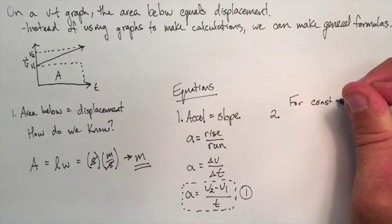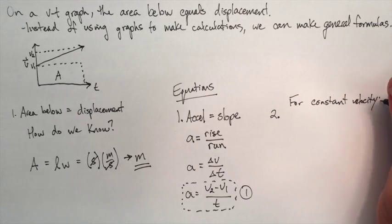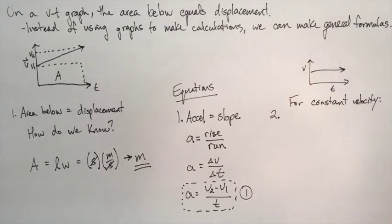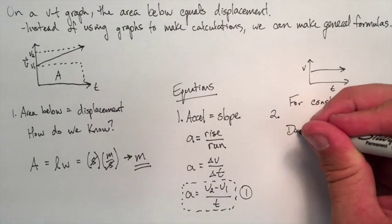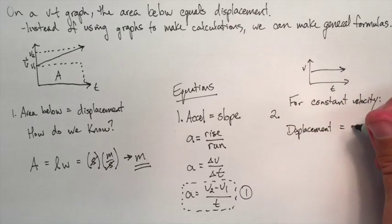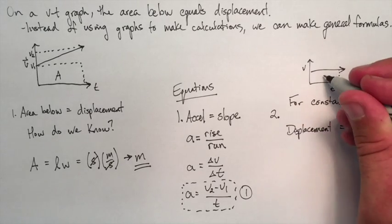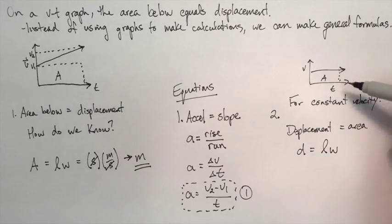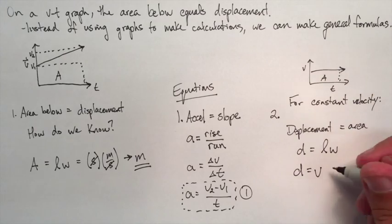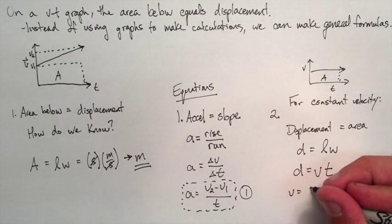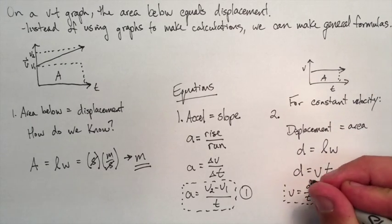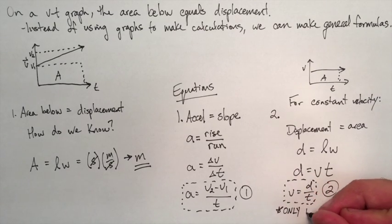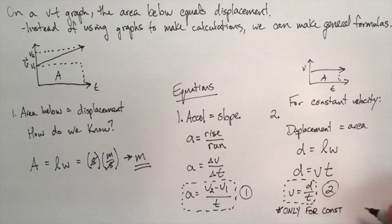Number two, we're going to use a modified graph here, where we have constant velocity. So that would give us a straight horizontal line coming from the V. So here again, displacement is equal to the area below. So that means, what is the area? It's just the length times the width. So let's put in the values for that. Length is the velocity, width is the time. So this gives us our second formula, which is only used when we have a constant velocity. Otherwise, we cannot use that formula.